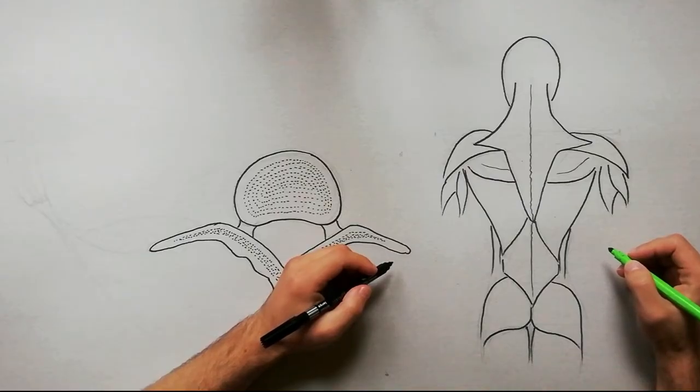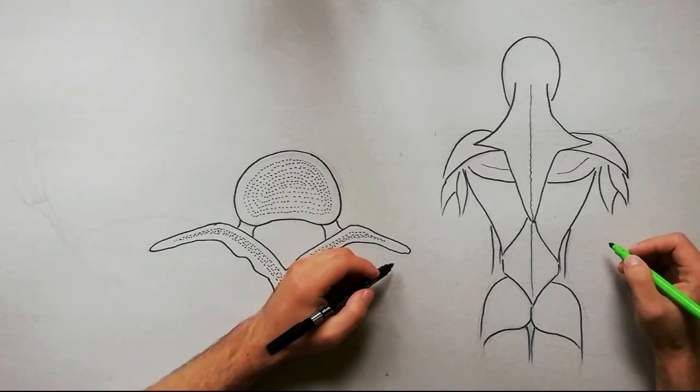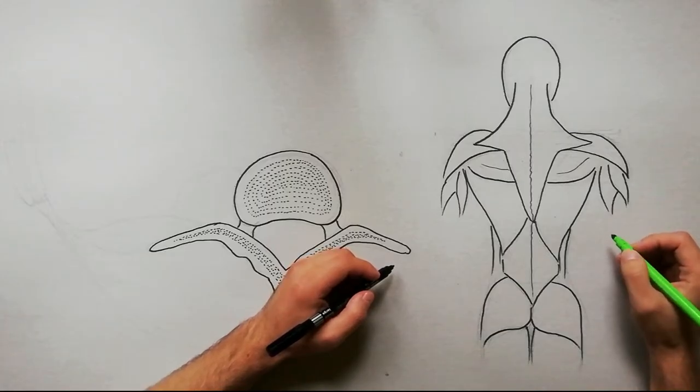The thoracolumbar fascia is the name given to the deep fascia on the back of trunk, although it is a thin fibroslamina in the thoracic region.